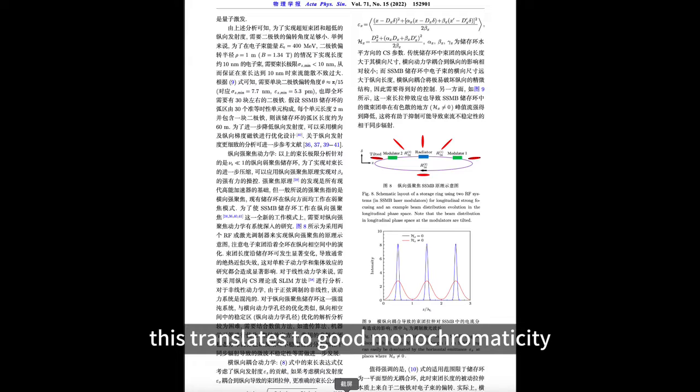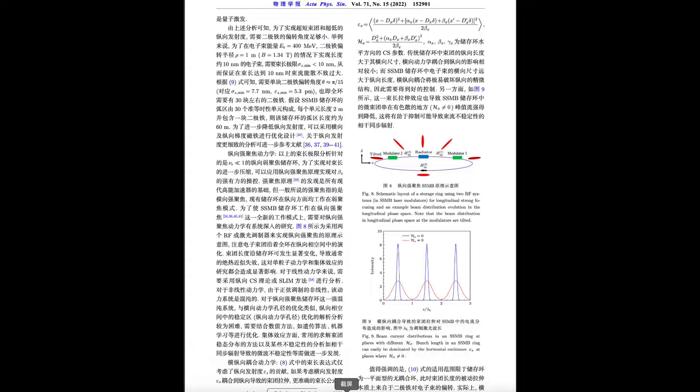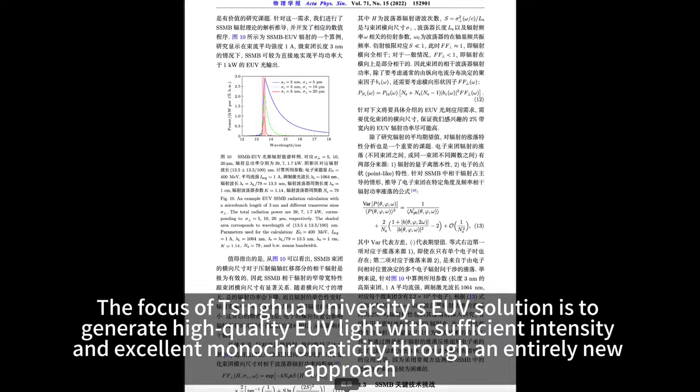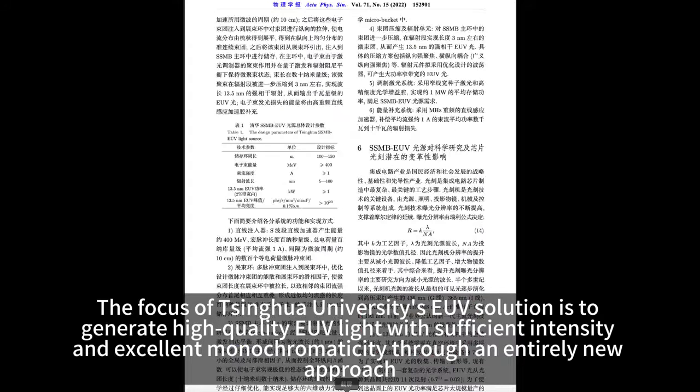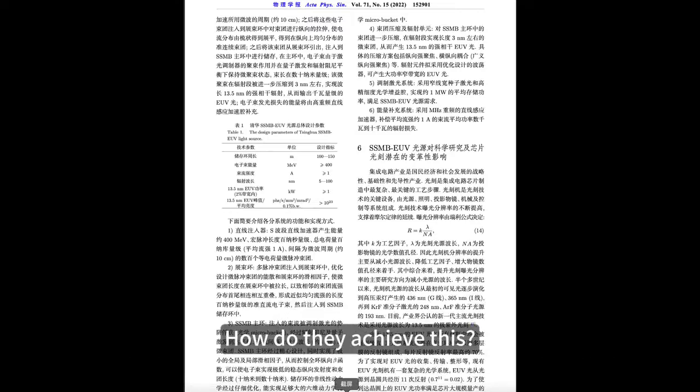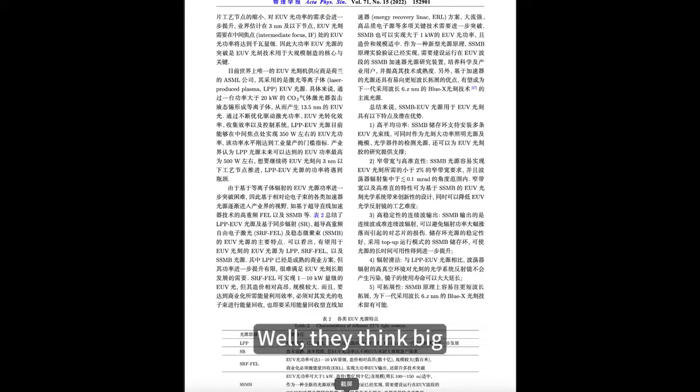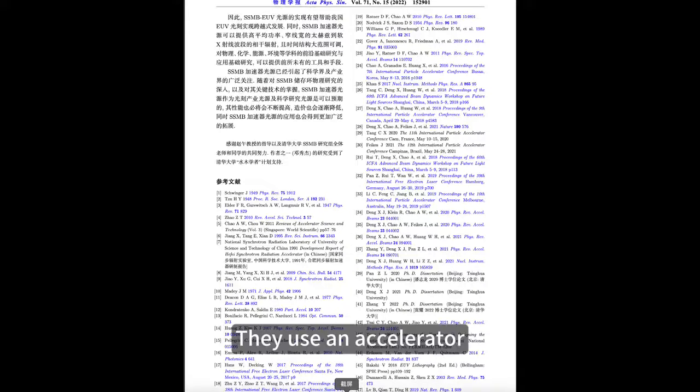In the context of photolithography, you want your light knife to be sharp. In terms of EUV light quality, this translates to good monochromaticity. The wavelength should not be too spread out, the bandwidth should be narrow. The focus of Tsinghua University's EUV solution is to generate high quality EUV light with sufficient intensity and excellent monochromaticity through an entirely new approach. They use an accelerator.